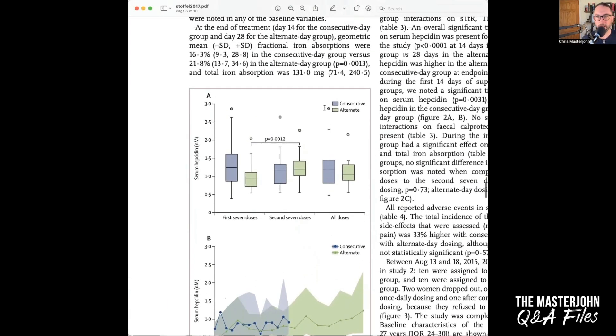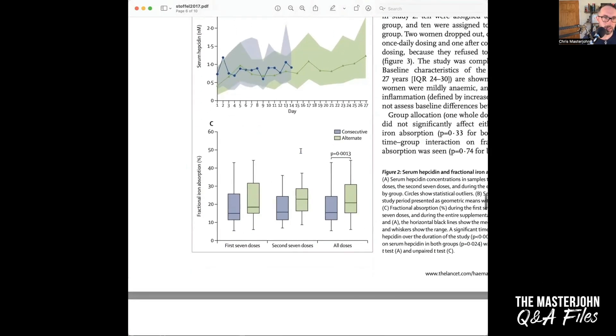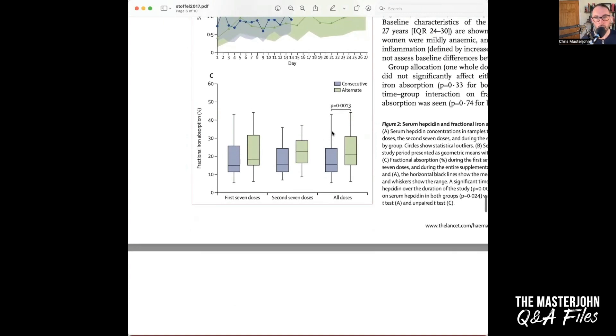Consecutive dosing is in purple and alternative dosing is in green. And what you can see is that when they're doing statistics on it, the statistics they're able to show is that the alternate dosing has better... sorry, this is serum hepcidin. The alternate day dosing is better at the end of the study for fractional absorption percentage than the consecutive dosing, so every day.